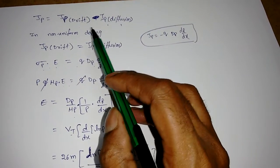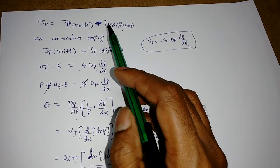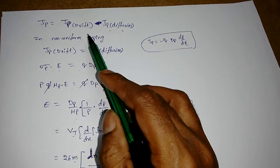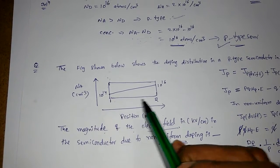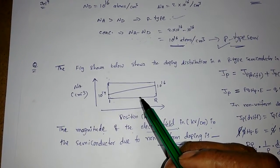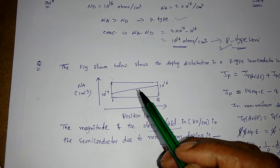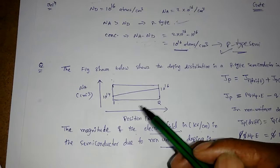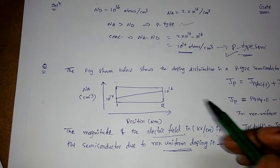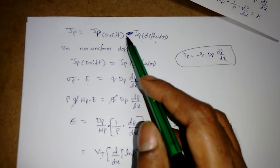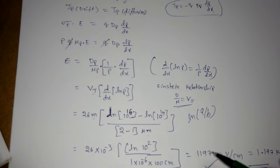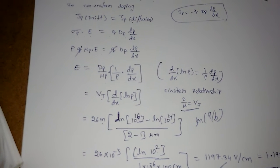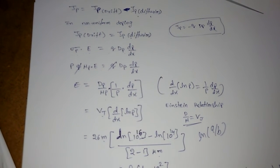To summarize: in non-uniform doping, diffusion is always opposed by drift. If the doping is constant, dn/dx or dp/dx = 0, so there is no diffusion. But whenever there is diffusion and an electric field is applied, the electric field opposes the diffusion and they become equal — that's how we solved the problem. Many more GATE numerical problems can be solved using these concepts.